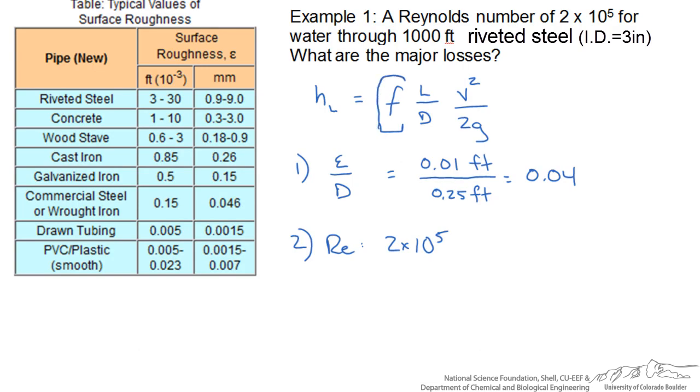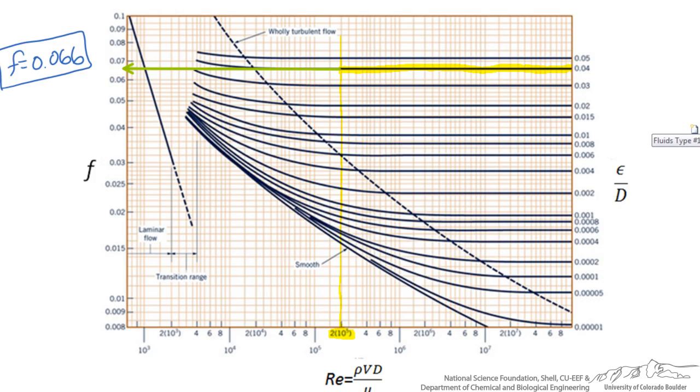We would use that below in our calculation for our losses and then determine some other condition of our system based on this information.